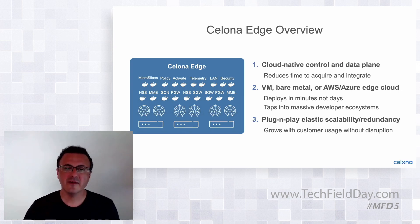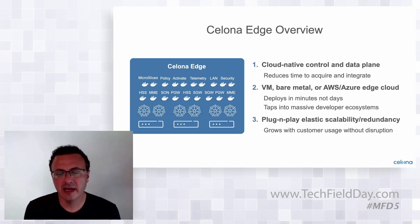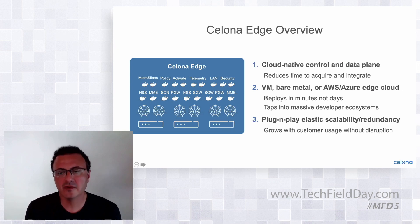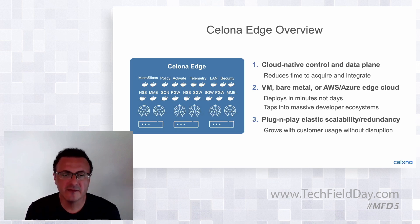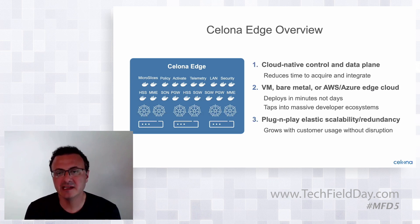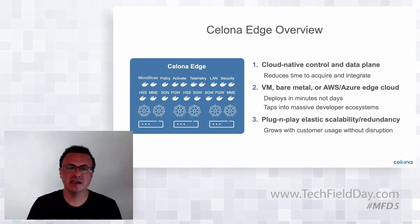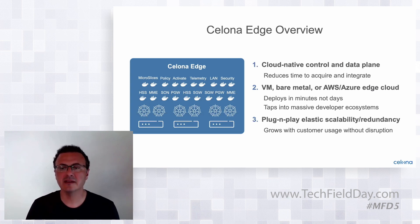One of the main functions that run on the Celona Edge is the LTE and the 5G core, which is both for the control and user plane. For the core, we basically broke down the 3GPP-defined LTE EPC and the 5G next-generation standalone core into microservices. This is essentially a stateless network function, which enables fully redundant and resilient network deployment.